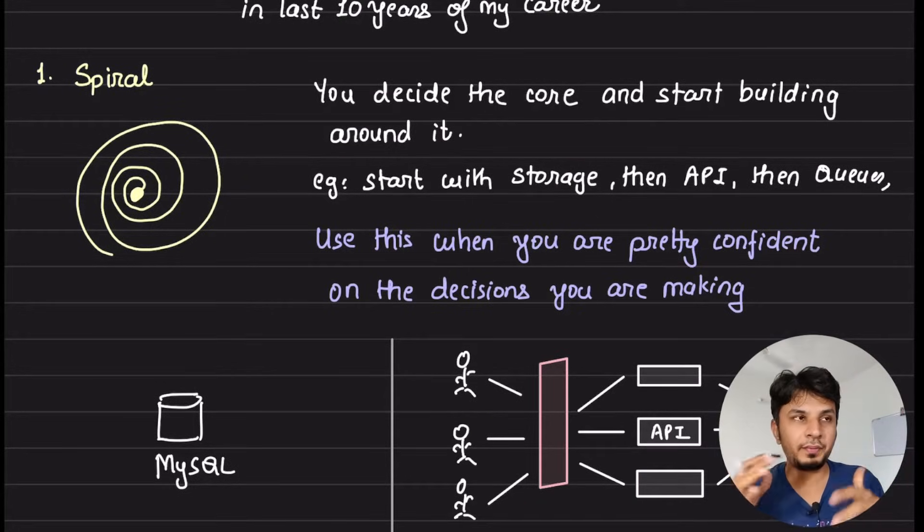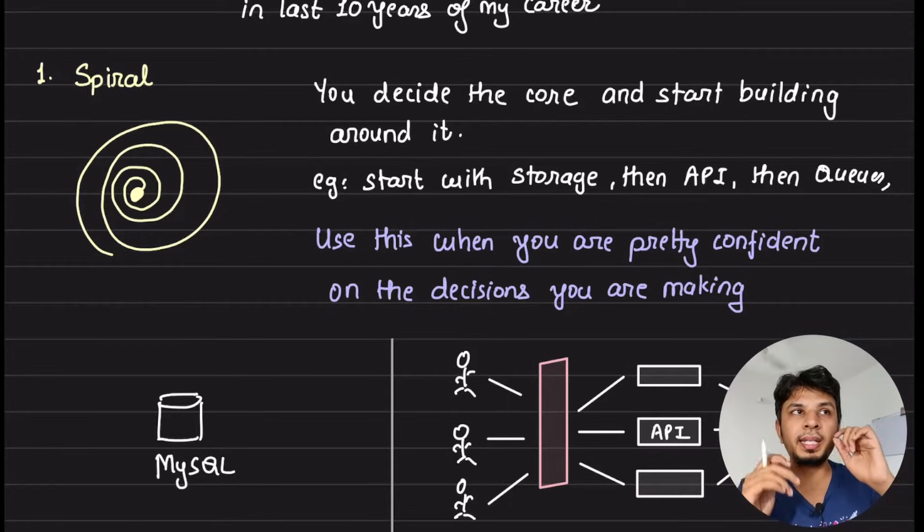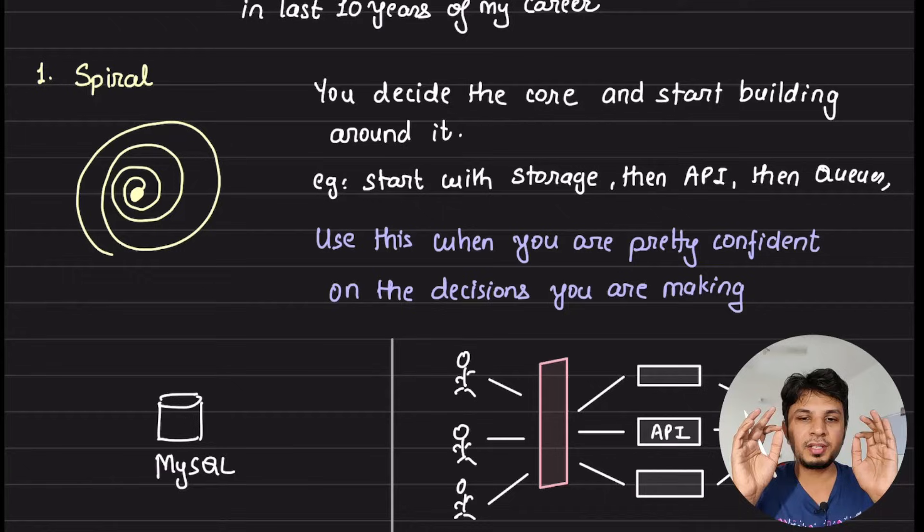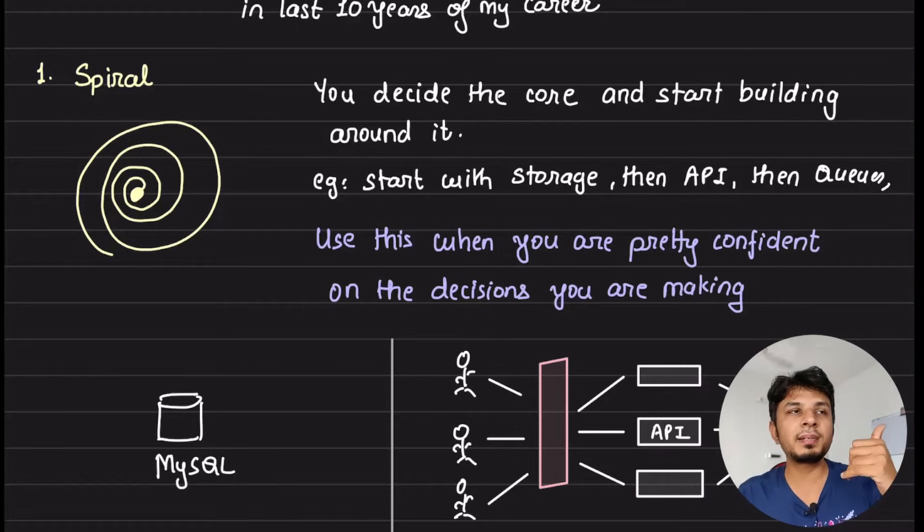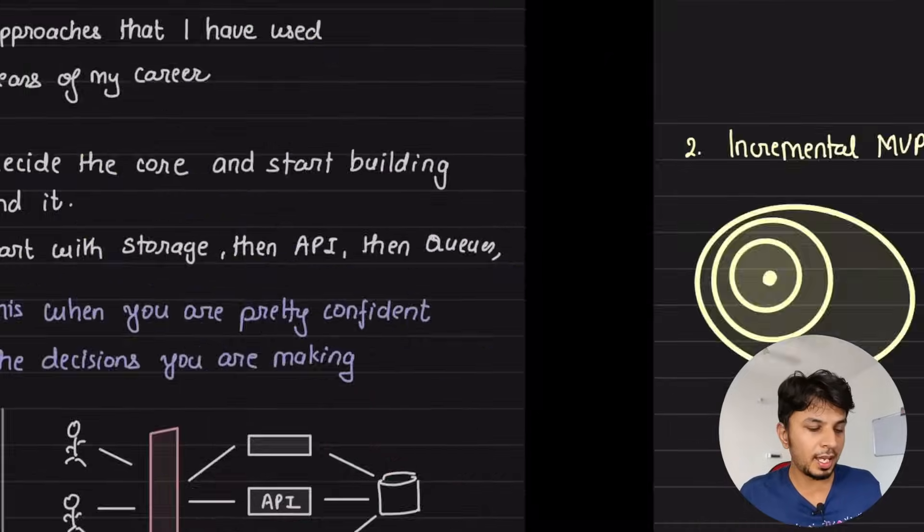When would you use a spiral based evolution? When you are pretty confident on the decisions you are making. When you are experienced enough or when you know the problem statement is simple enough that the decision that you are making is very crisp, is very optimal and this is exactly how it should be done. Spiral way of designing systems works the best. These systems are pretty predictable on how they should be designed and you are just evolving them very quickly.